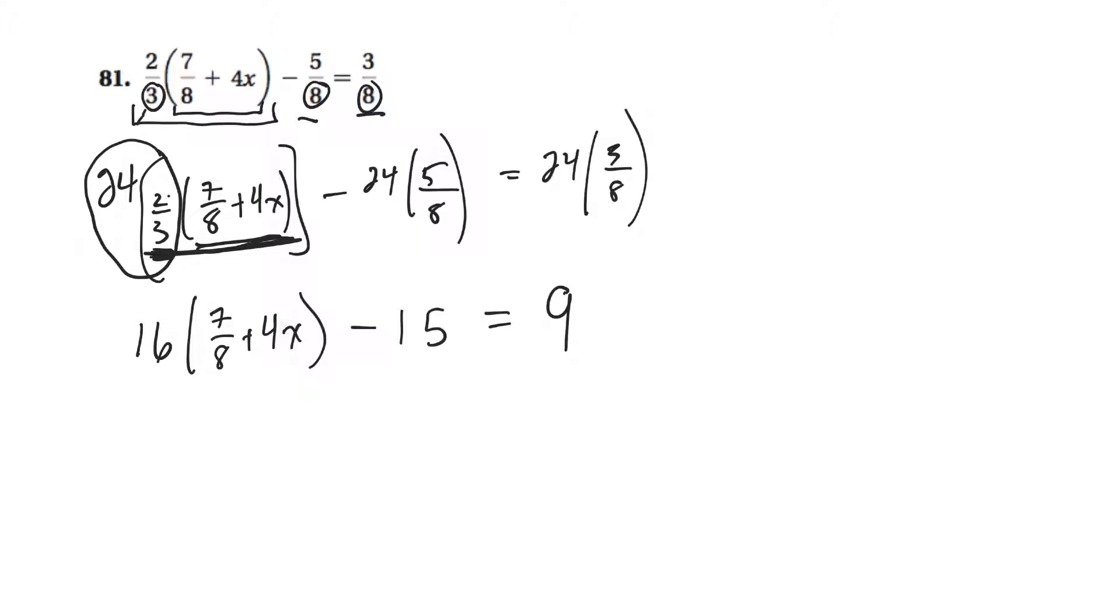But let's maybe now get rid of the brackets. So let's multiply the 16 through. So 16 times 7/8, or 16 times 7 divided by 8. Figure out what that is. I think it comes out to 14. 16 times 4x would be plus 64x minus 15 is equal to 9. There. Now there's no fractions. I'm liking that.